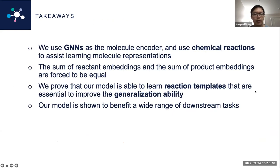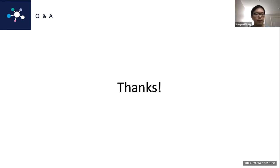In conclusion, we use GNNs as the molecule encoder and use chemical reactions to assist learning molecular representations. We enforce that the sum of reactant embeddings equals the sum of product embeddings. We prove that our model can learn reaction templates that improve generalization ability. Our model benefits a wide range of downstream tasks including reaction prediction, property prediction, and graph edit distance prediction. That concludes my presentation — I'm happy to take any questions.